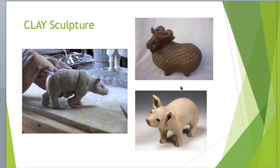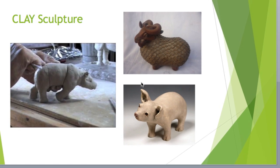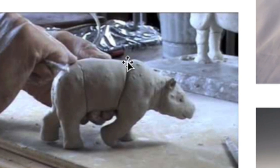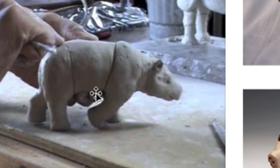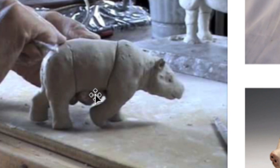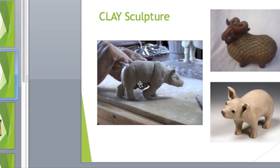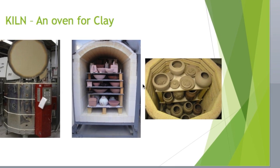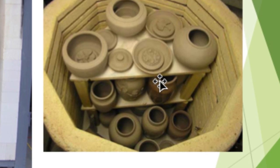Another type of sculpture is a clay sculpture. An artist starts with a lump of clay and they mold it and shape it with their hands or special tools, they create texture, and all sculptures have form. When a clay sculpture is finished, it's put in something called a kiln.